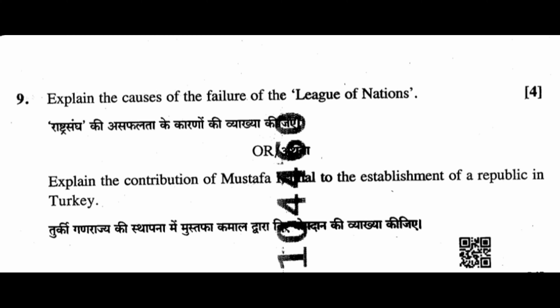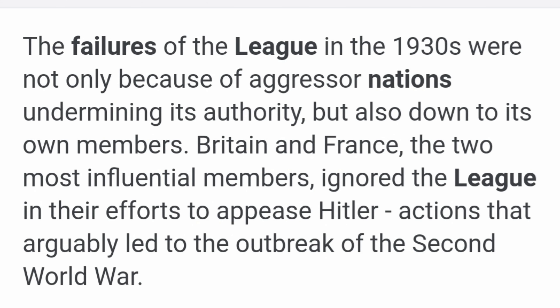Question 9: Explain the causes of the failure of the League of Nations. The failures of the League in the 1930s were not only because of aggressor nations undermining its authority, but also due to its own members Britain and France. The two most influential members ignored the League in their efforts to appease Hitler, actions that ultimately led to the outbreak of the Second World War.